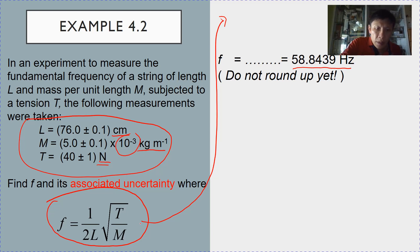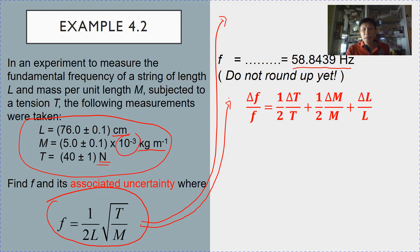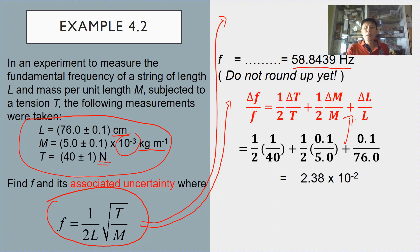To find the actual uncertainty, we look at the expression and follow the rules for multiplication and division. The fractional uncertainty of f is half the fractional uncertainty of T — the half comes from the square root sign. Similarly, there is a half in front of the fractional uncertainty of m, since m is also under the square root. Even when dividing by L, you still add the fractional uncertainty of L. Plugging in the values, your calculator gives the fractional uncertainty of f. Note this number has no units, as it is a fraction.